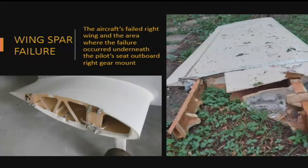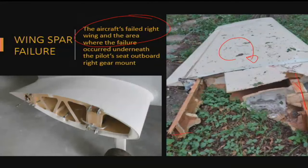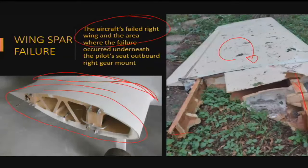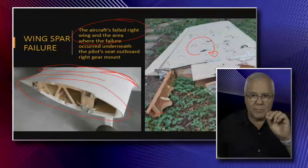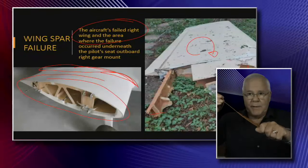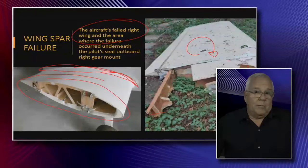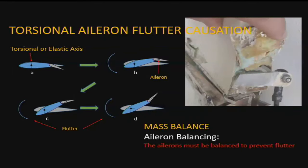The wing spar failure on the right wing occurred in the area underneath the pilot's seat, on the outboard side of the right-hand gear mount. This wing is upside down in the photo — you have to flip it toward yourself. There's the rear spar, there's the main spar. The weak spot is not where you'd expect; it is where the wing can no longer absorb forces through elasticity, either in twisting or the flapping moment. That is where failure most probably takes place.